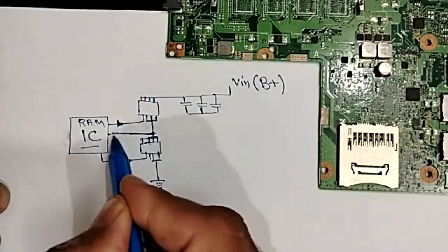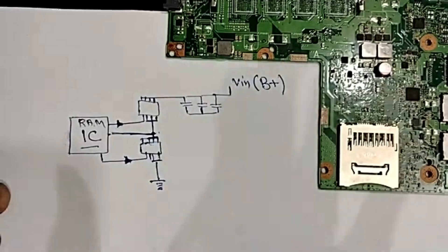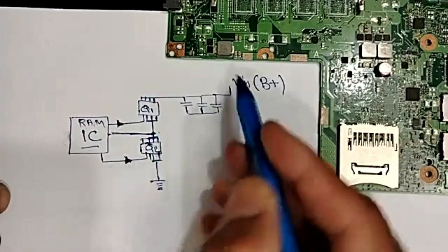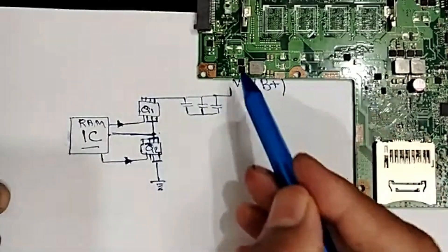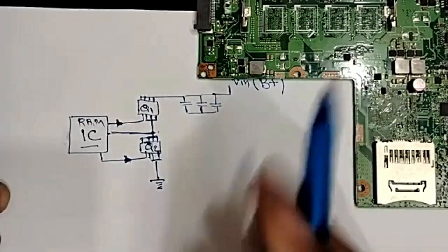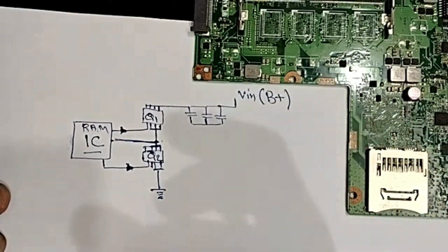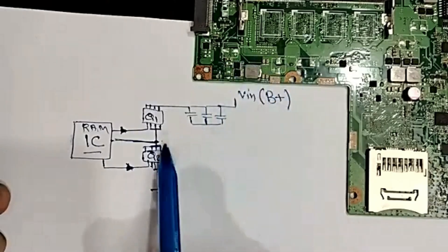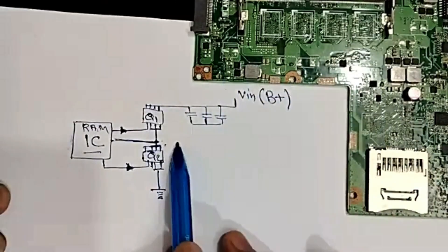Here I teach you the short circuit process — just stay tuned and be patient. We have the first MOSFET Q1 and the second MOSFET Q2. I can see the circuit and draw it without a schematic — without anything. We see the circuit, I can draw it.